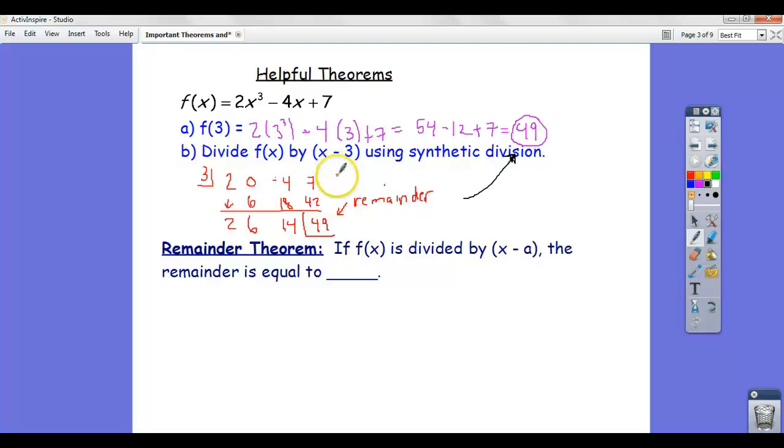And that's called the remainder theorem. So, if f of x is divided by x minus a, the remainder is equal to f of a. That's the remainder theorem. So, it's a quick way, sometimes a quicker way to find out what the remainder would be if you were to do the division.